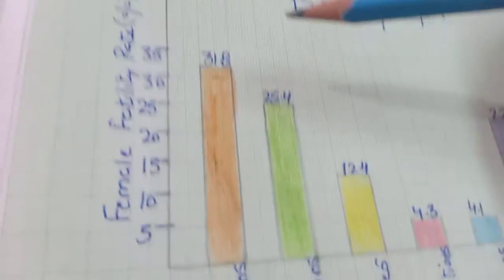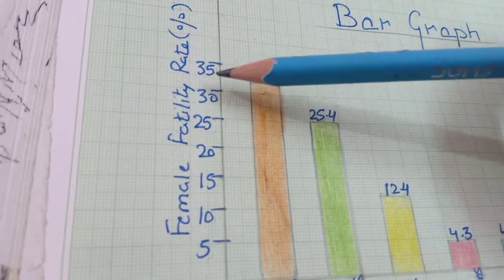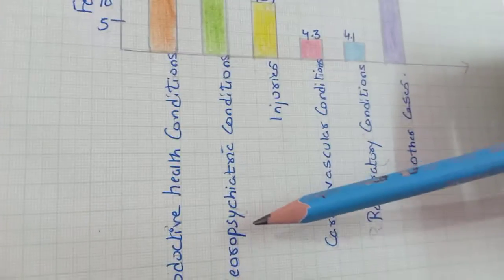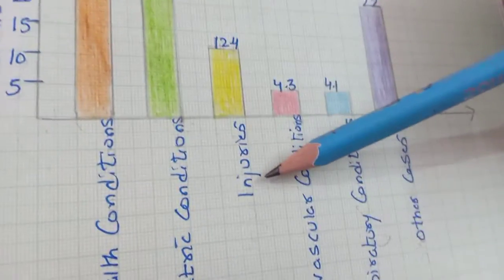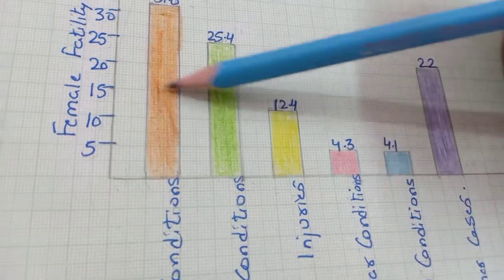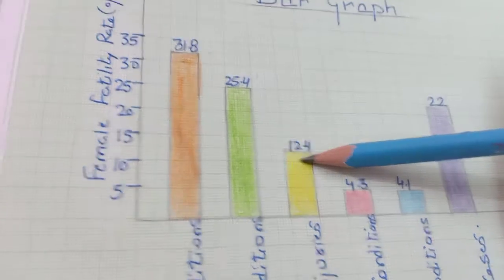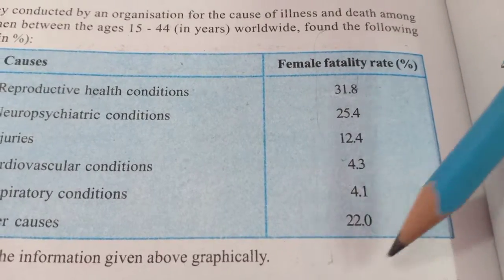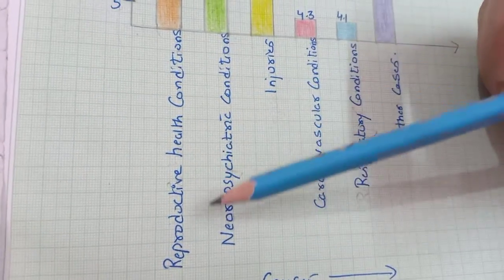31.8 है तो हम assume करके अंदाजे से इसको 30 और 35 के बीच में लगाएंगे। Our second length is for neurological conditions which is 25.4. Similarly, injuries की value है 12.4. हम इस table से अपनी values देखते जाएंगे और length of bar depend करेगी causes के सामने उसकी value पर — जैसे 4.3, 4.1, और 20 — I am plotting 4.3, 4.1 और 20.